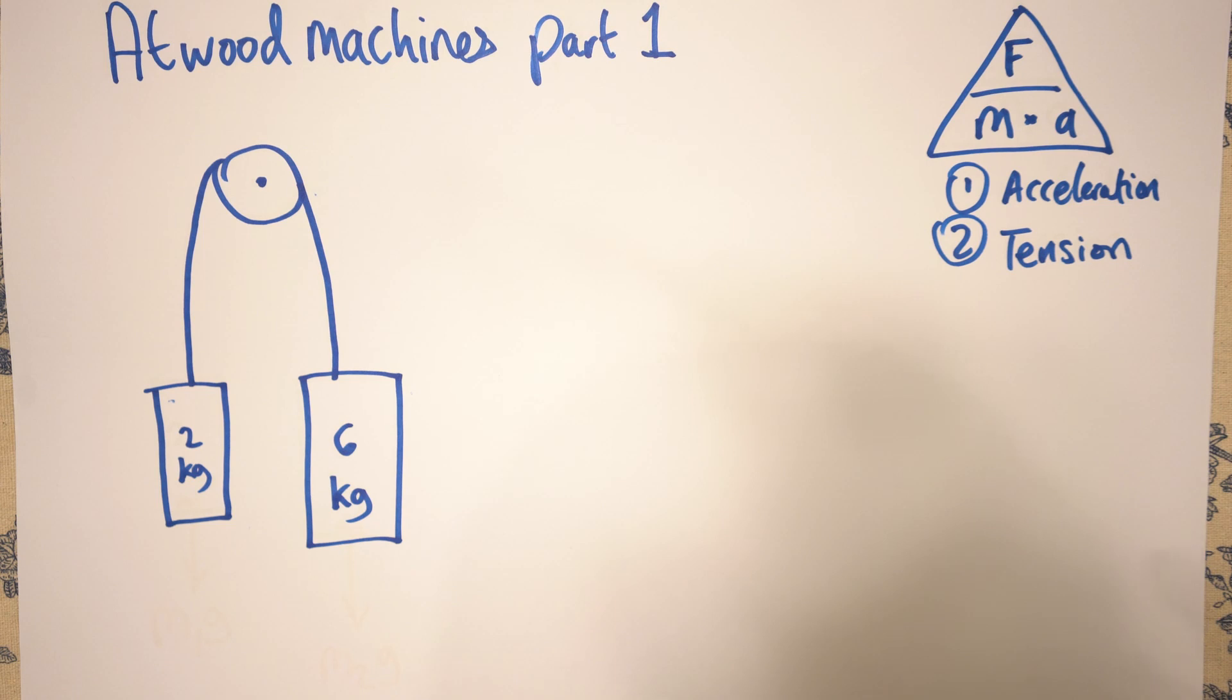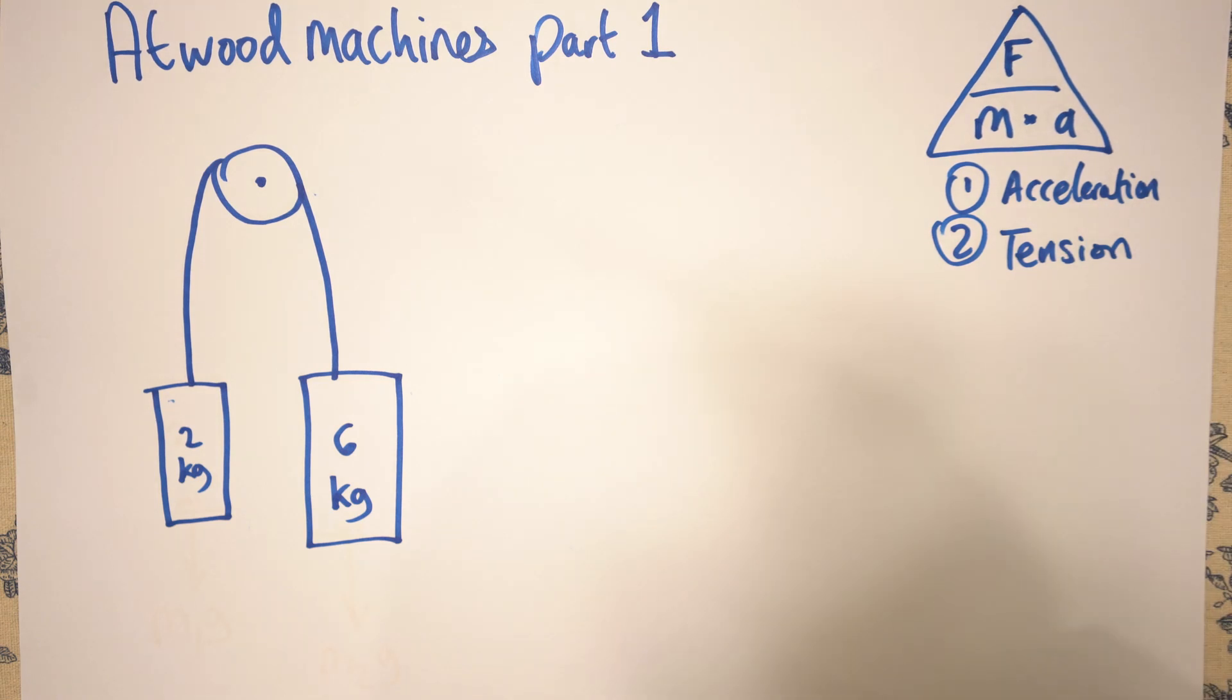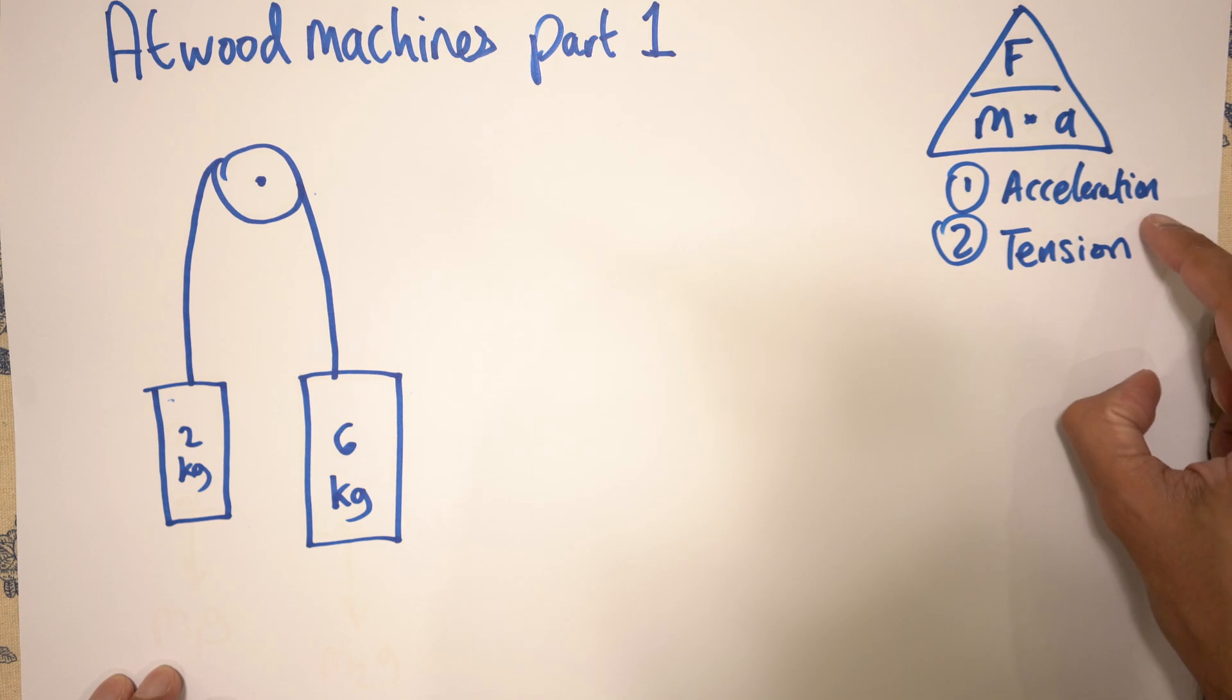Now despite the complicated looking equations, the only equation we really need to be aware of is Newton's second law, that's F equals ma, and with this we can basically work out the whole thing. Typically in this situation you want to be able to work out the acceleration and the tension in the string.